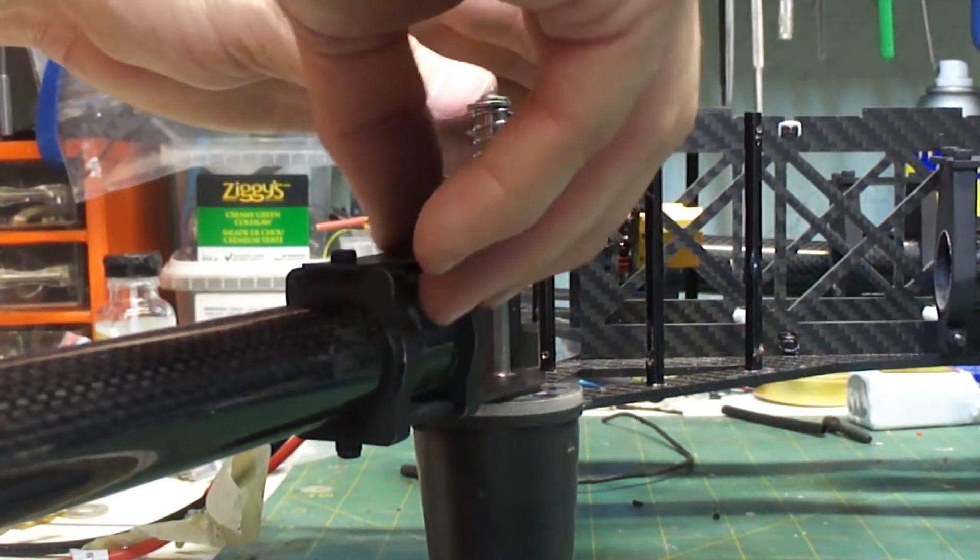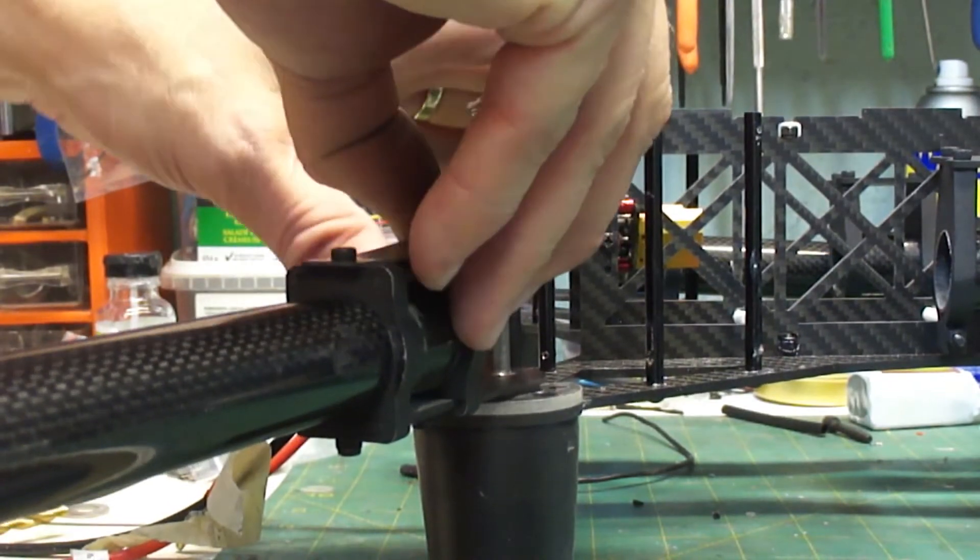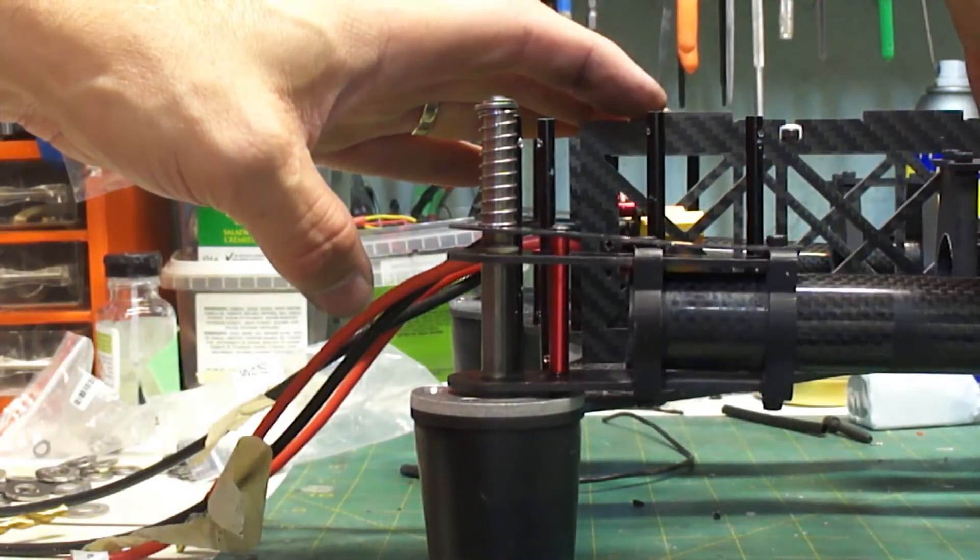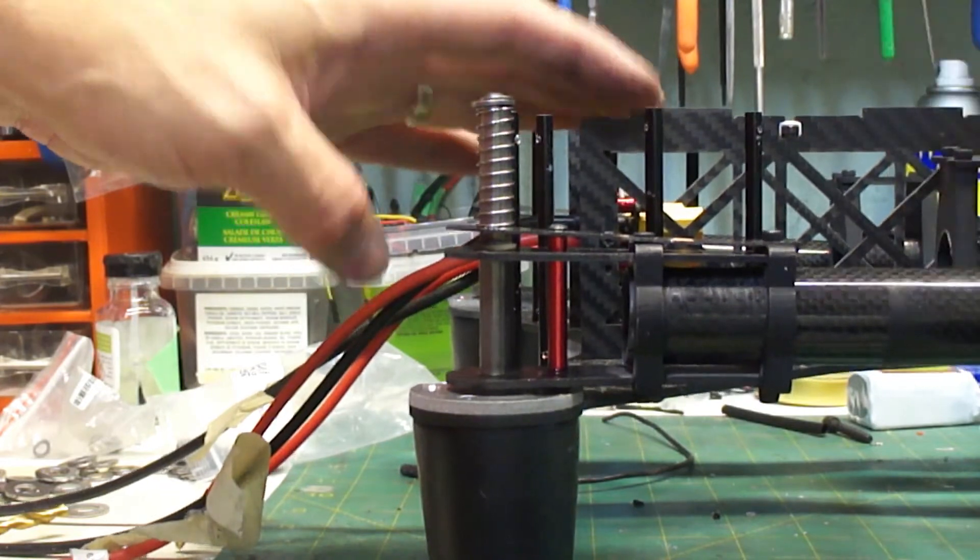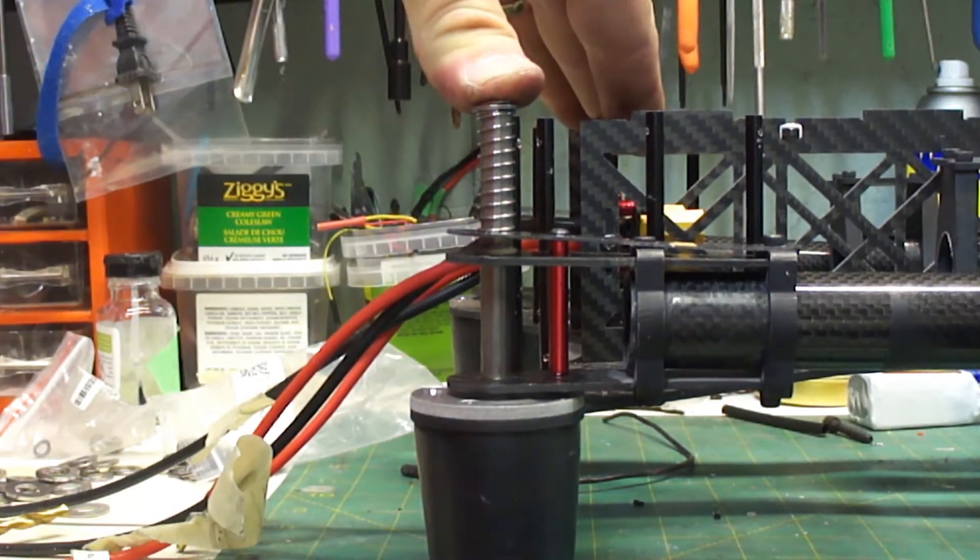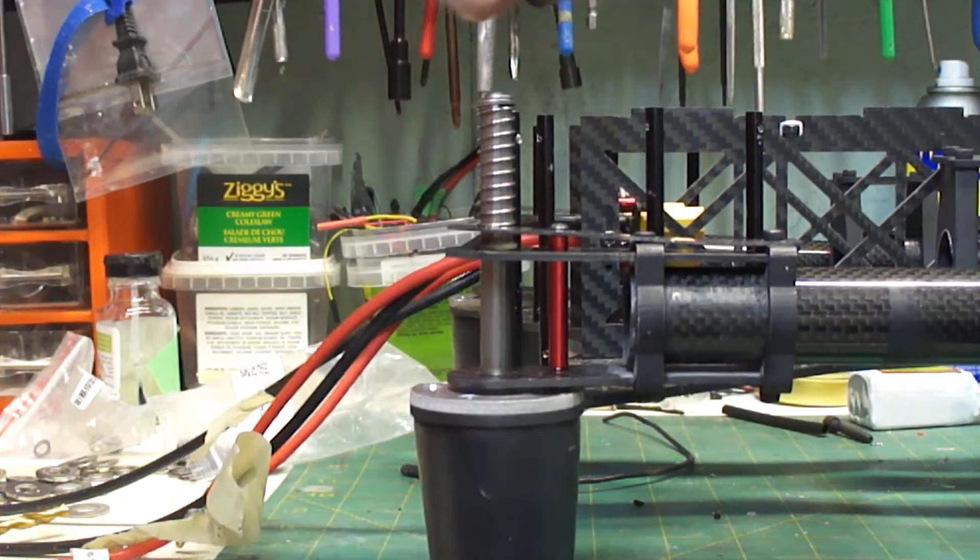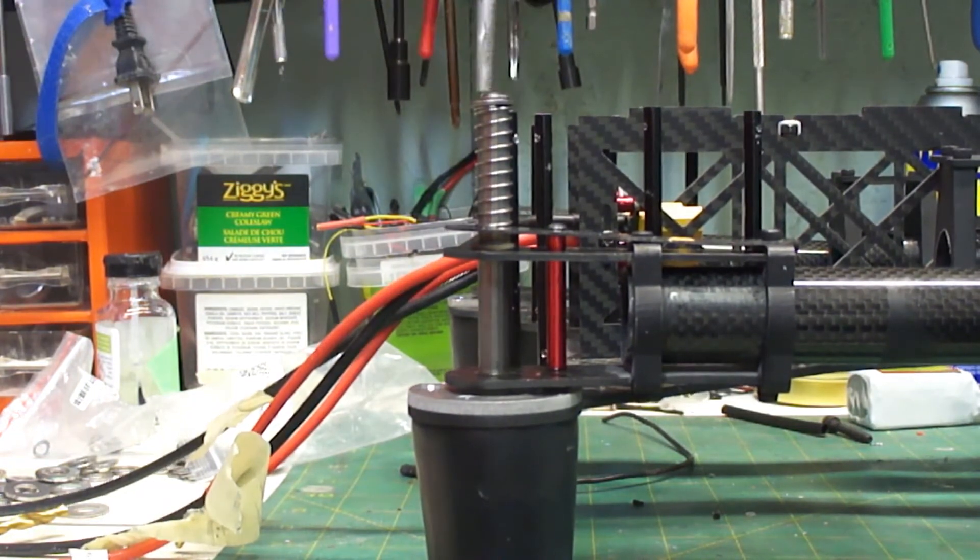And then when I want to fold it up, lift it up and over she goes. She's locked into place. Now of course I got a little bit of wobble because there's no top plate on it so she's moving a little bit on that axis.